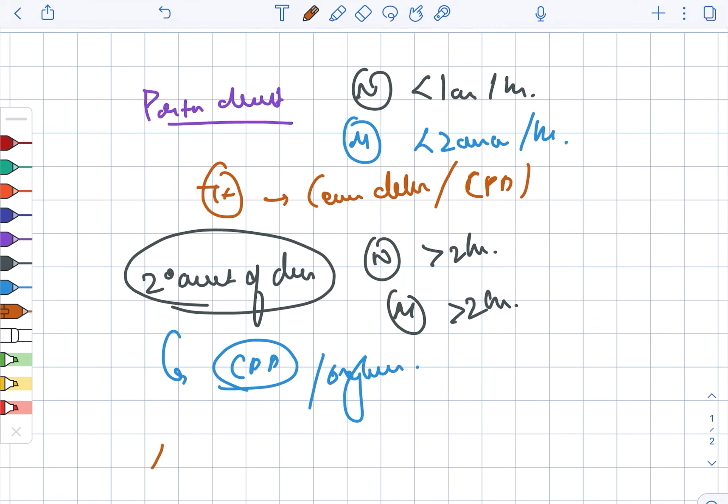Next, looking at the arrest of descent. In case of nullipara, it is greater than 1 hour. In case of multipara, it is also greater than 1 hour. If CPD is present, you perform cesarean delivery.